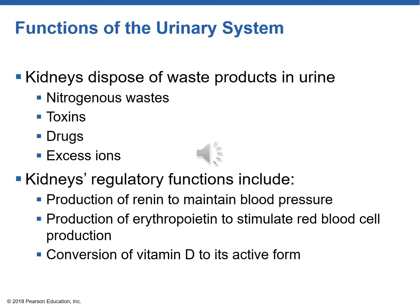Let's look at the functions of the urinary system. The kidneys need to eliminate waste products, including drugs. Some of the other regulatory functions include the production of renin — we're going to be talking about the renin-angiotensin-aldosterone pathway a little later in this lecture — and erythropoietin, which is very important, and the conversion of vitamin D. One thing we need to add here: the kidneys also perform a function in regulation of pH. We will be studying that more, but that's an important thing to add to our notes.